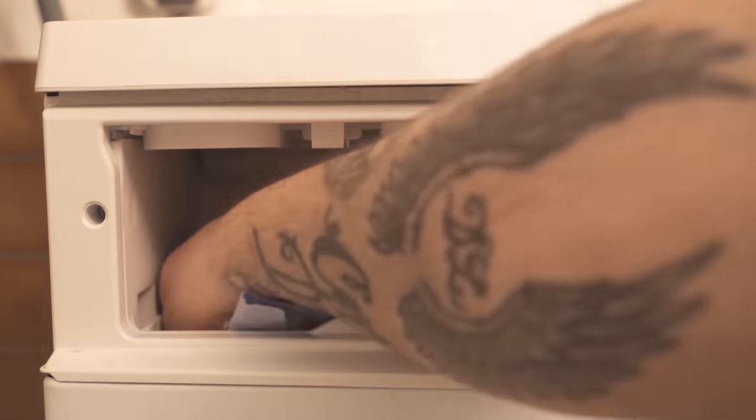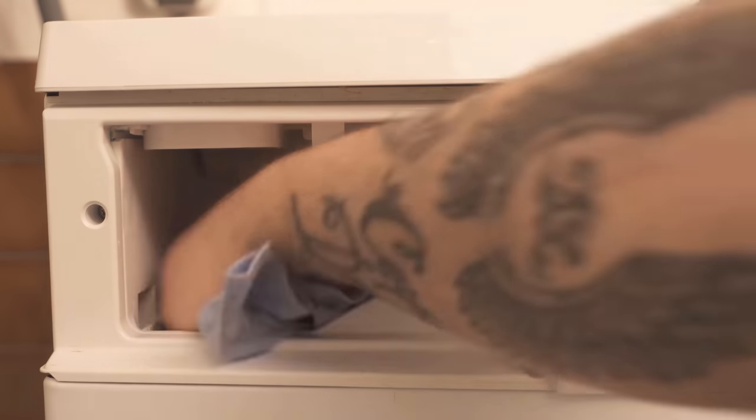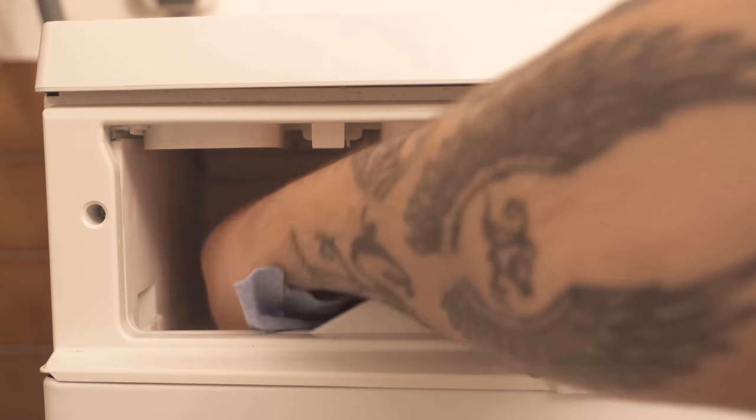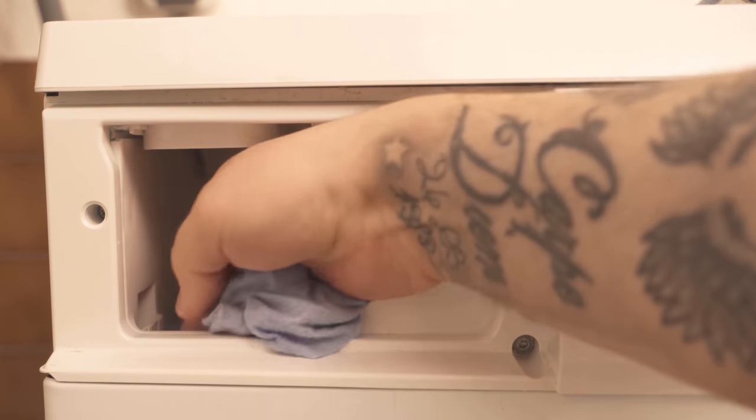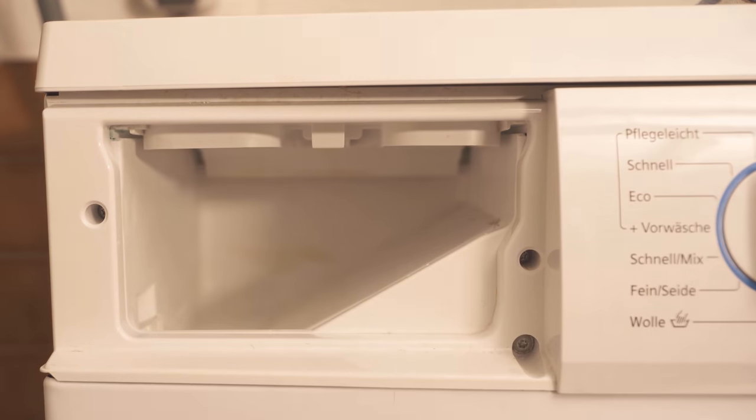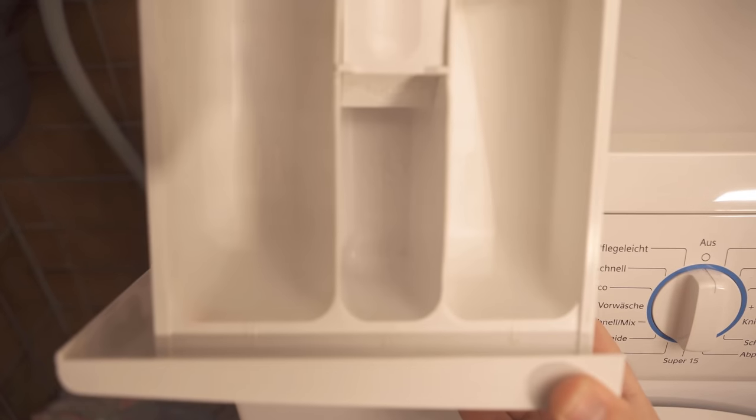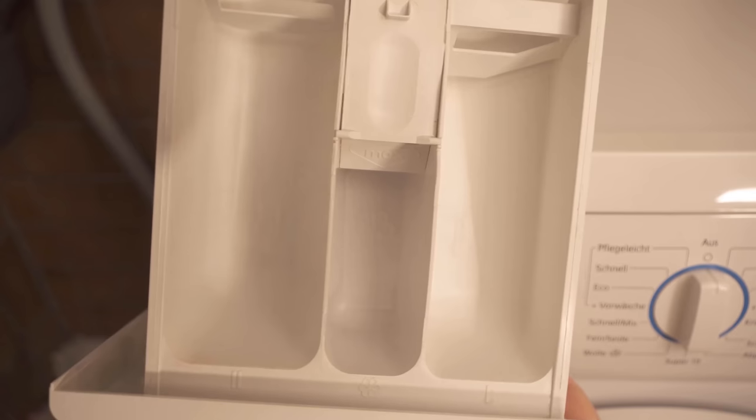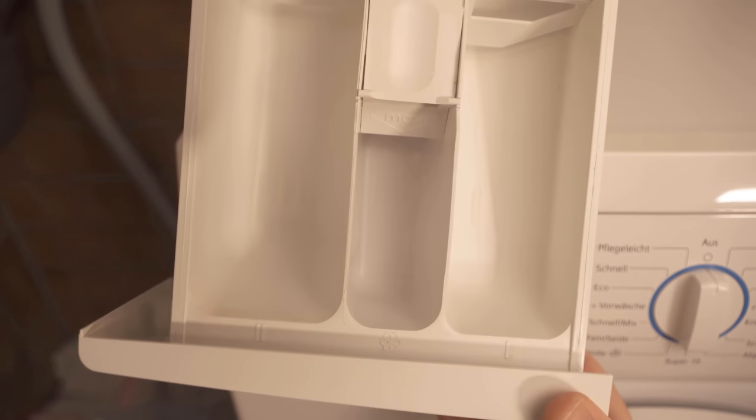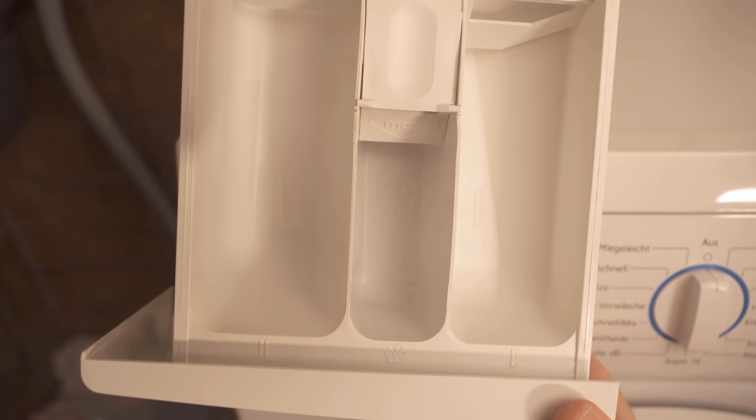If you have now cleaned the drawer or had it in the dishwasher, you can reinstall it. You have successfully cleaned the drawer and compartment of your washing machine. To install it, just push it back in. You may have to press down this button again so that the drawer goes back in.